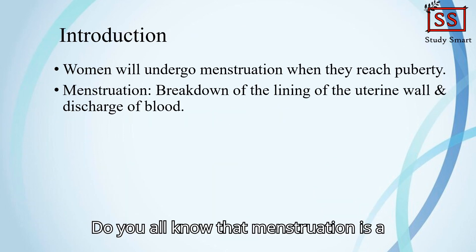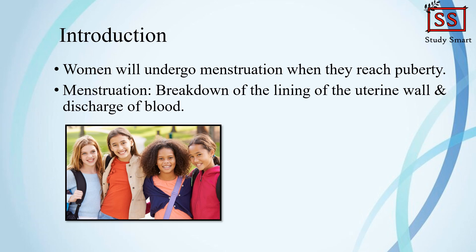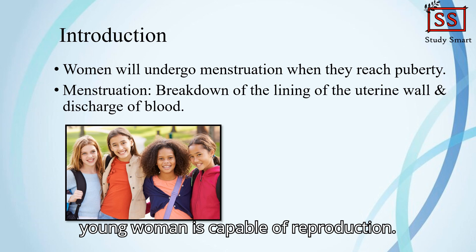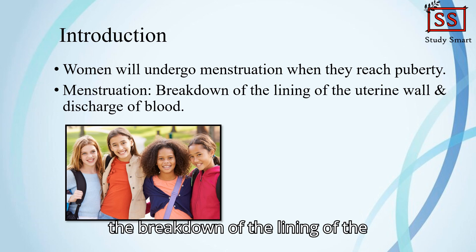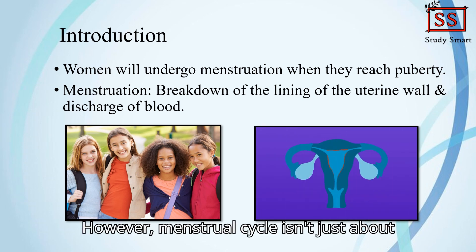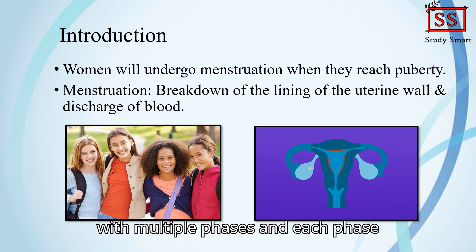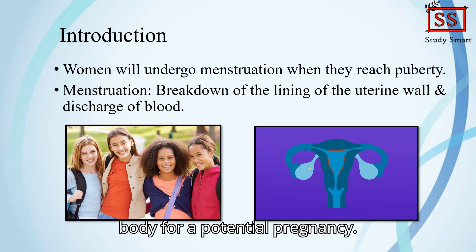Do you all know that menstruation is a key milestone in puberty for girls? It's the body's way of signalling that a young woman is capable of reproduction. So, what is menstruation? It's the breakdown of the lining of the uterine wall and the discharge of blood. However, the menstrual cycle isn't just about periods. It's a complex cycle with multiple phases, and each phase plays an important role in preparing the body for a potential pregnancy.